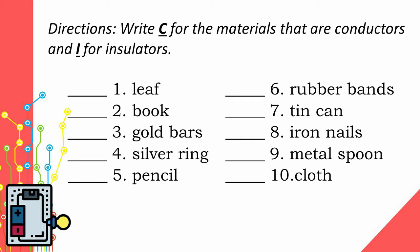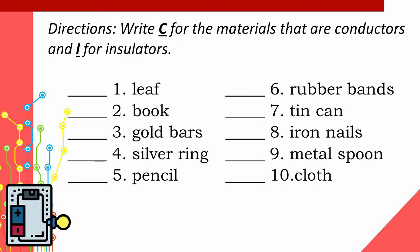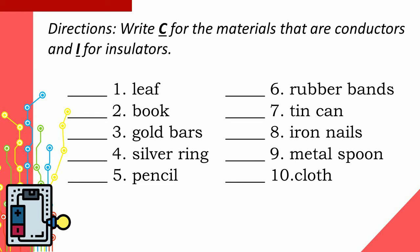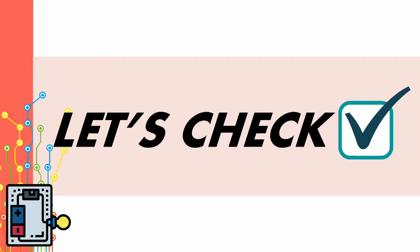Number 5: Pencil. Number 6: Rubber bands. Number 7: Tin can. Number 8: Iron nails. Number 9: Metal spoon. Number 10: Cloth. Let's check!